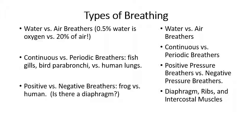The process of converting glucose into ATP is referred to as aerobic respiration, and aerobic respiration takes place in the mitochondria. In order to convert glucose into ATP, the mitochondria consume oxygen as a reactant and produce carbon dioxide as a waste product that needs to be gotten rid of.